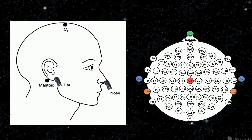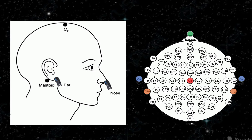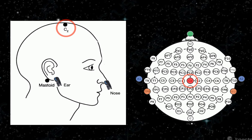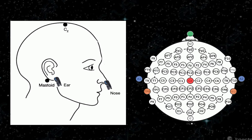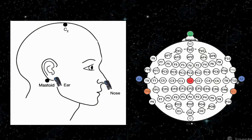However, sometimes we also use a reference on the scalp, such as CZ at the vertex or mastoid electrodes. In this case, you can also compare your data to experiments using the same reference, unless you re-reference the data offline. And we will see how to do that.